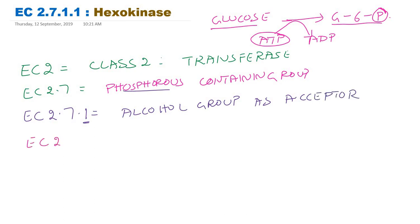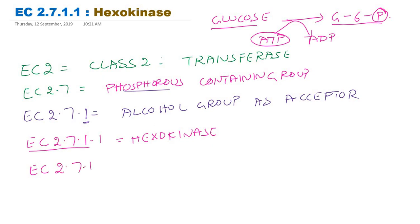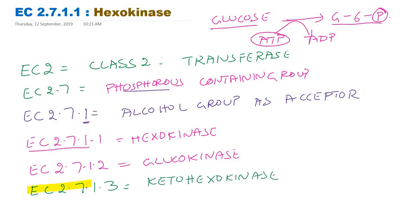The serial number here is EC 2.7.1.1, so hexokinase is the first enzyme in this series. The second enzyme EC 2.7.1.2 is glucokinase. The third enzyme in the same series is ketohexokinase, so EC 2.7.1.3. Similarly, EC 2.7.1.4 — the fourth enzyme in this series — is fructokinase.